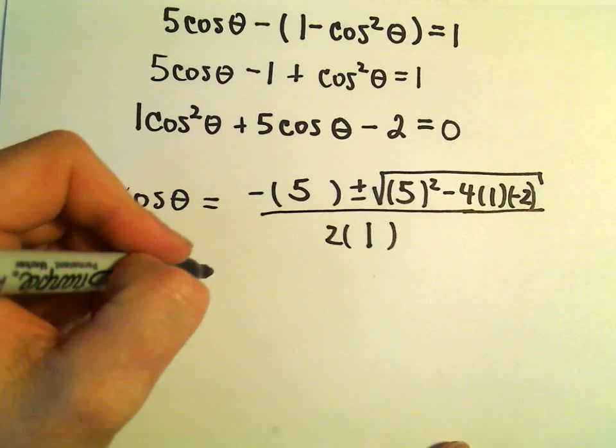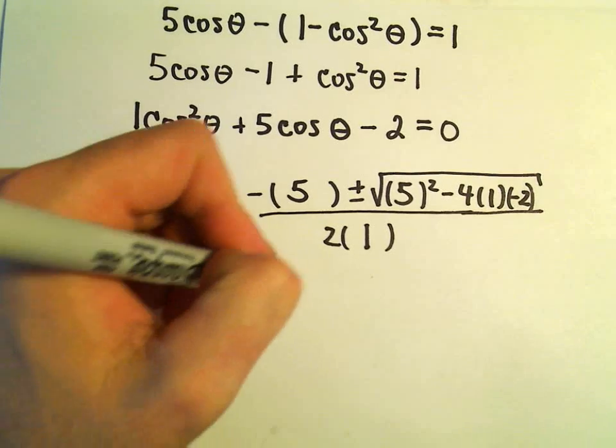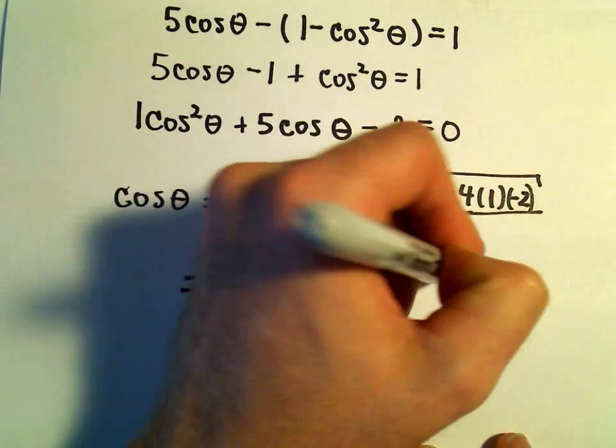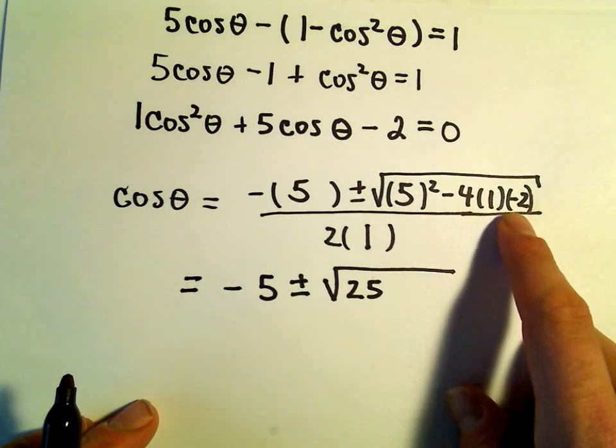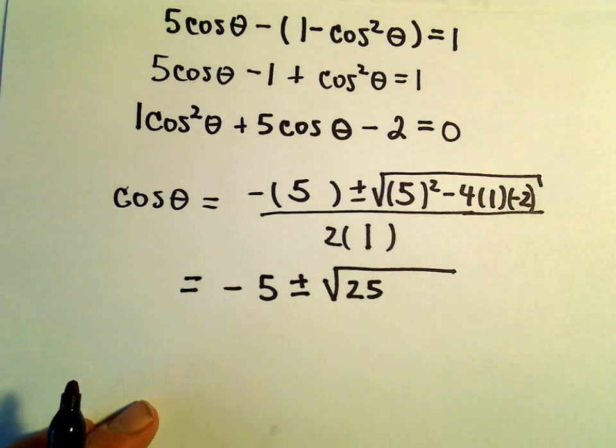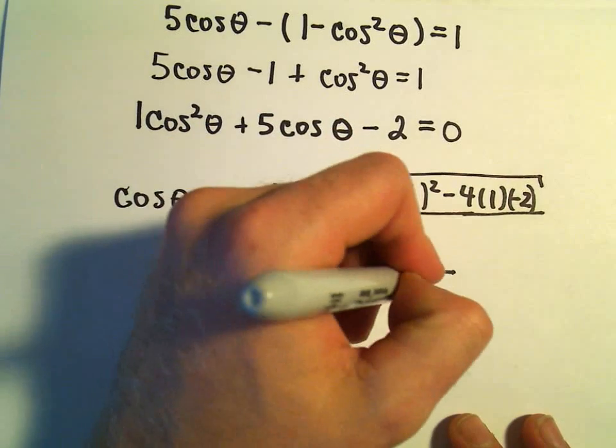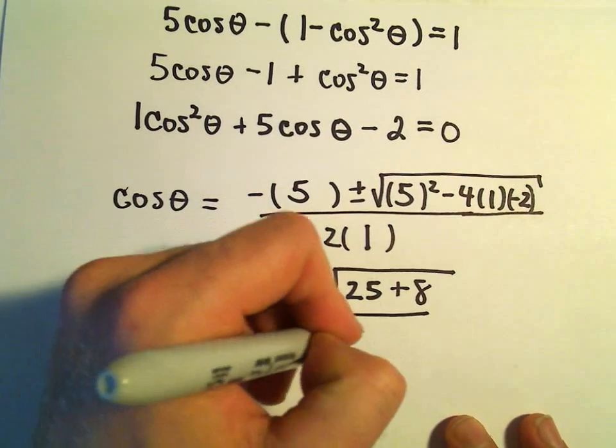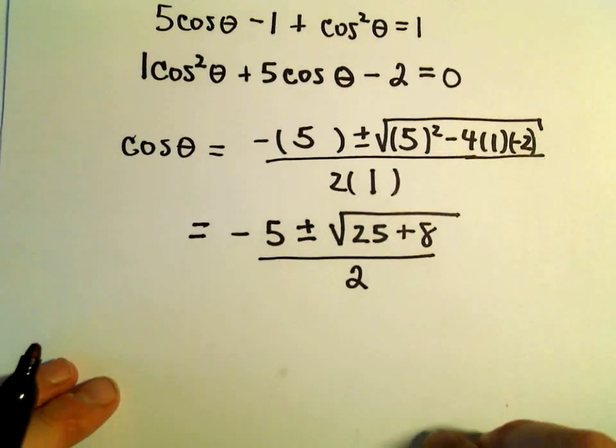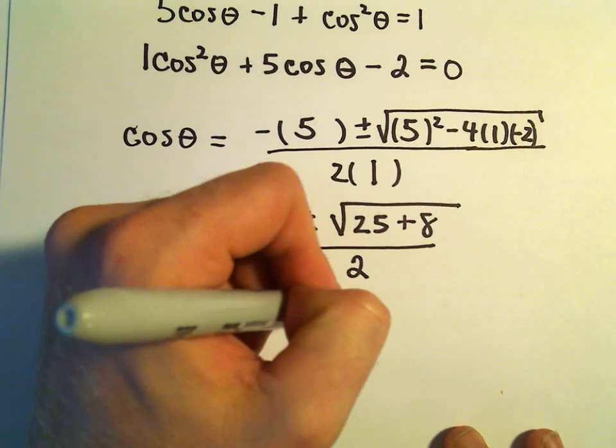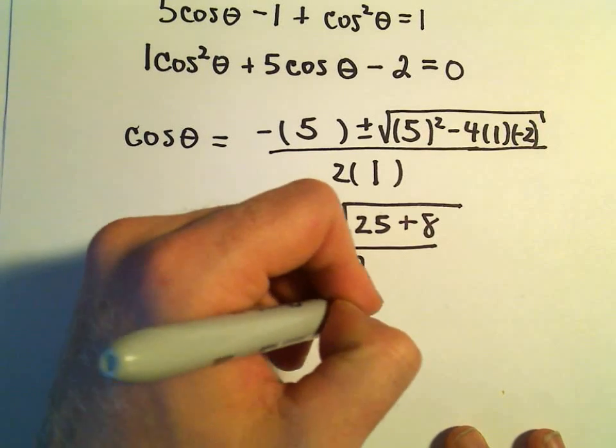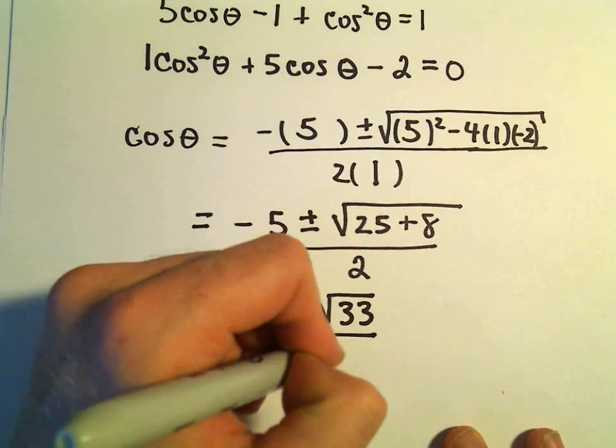Now we get to simplify this a little bit. We've got negative 5 plus or minus the square root of 25. We've got negative 4 times a negative 2, that'll give us a positive 8, all over 2. So we keep simplifying here. That's negative 5 plus or minus the square root of 33 over 2.